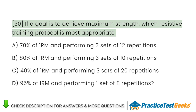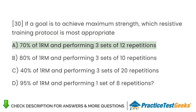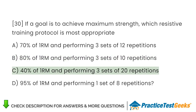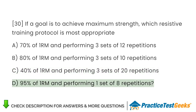If a goal is to achieve maximum strength, which resistive training protocol is most appropriate? A. 70% of 1RM performing 3 sets of 12 repetitions. B. 80% of 1RM performing 3 sets of 10 repetitions. C. 40% of 1RM performing 3 sets of 20 repetitions. D. 95% of 1RM performing 1 set of 8 repetitions.